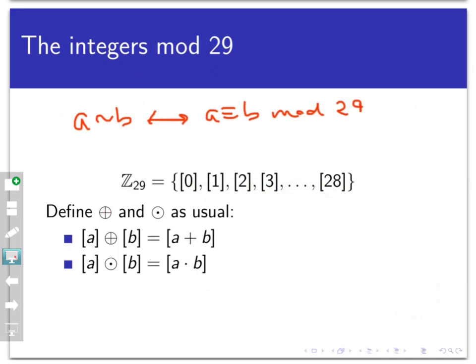We can define our ⊕ (O plus) and ⊙ (O dot) operations as usual. If I want to add two classes together using the ⊕ operation, I'm going to form the equivalence class of the regular addition of their representatives, and likewise for multiplication. Keep that set and those operations in mind — we're going to be using them.